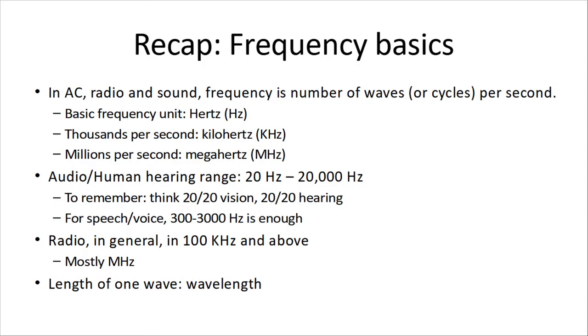Recap of frequency basics. In AC, alternating current electricity, in radio, and sound, they all have frequencies, and the frequency is the number of waves or cycles per second. The basic frequency unit is hertz, so 1 hertz is 1 cycle per second. Thousands per second is kilohertz. Millions per second is megahertz. The audio-human hearing range is 20 hertz to 20,000 hertz, or 20 kilohertz.